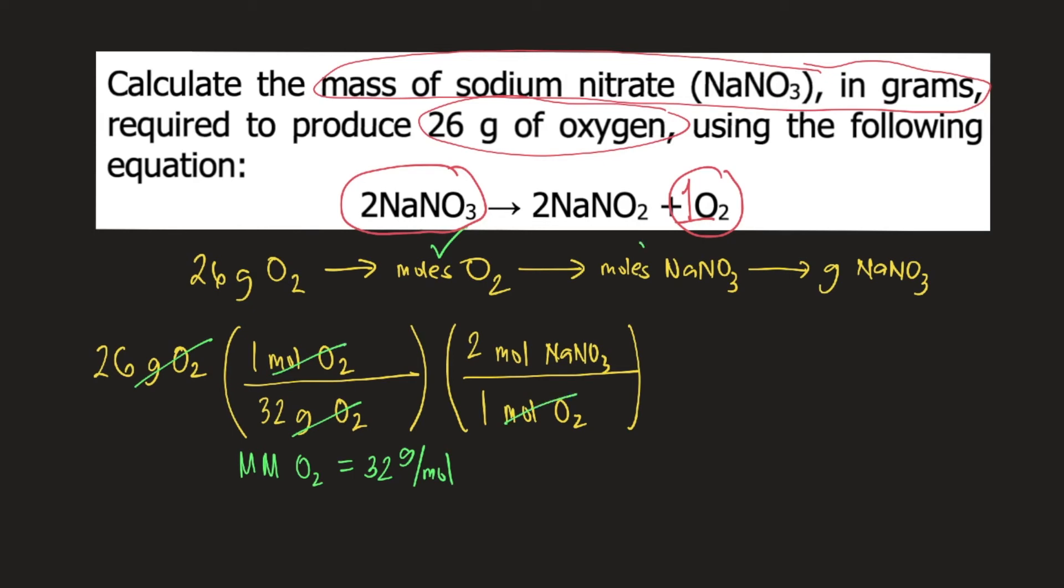Now you have moles of NaNO3. And finally, you need to convert moles of NaNO3 into grams of NaNO3. Here you need the molar mass of NaNO3, which is equal to 85 grams per mole. So you put 1 mole at the bottom and on top you put 85 grams.